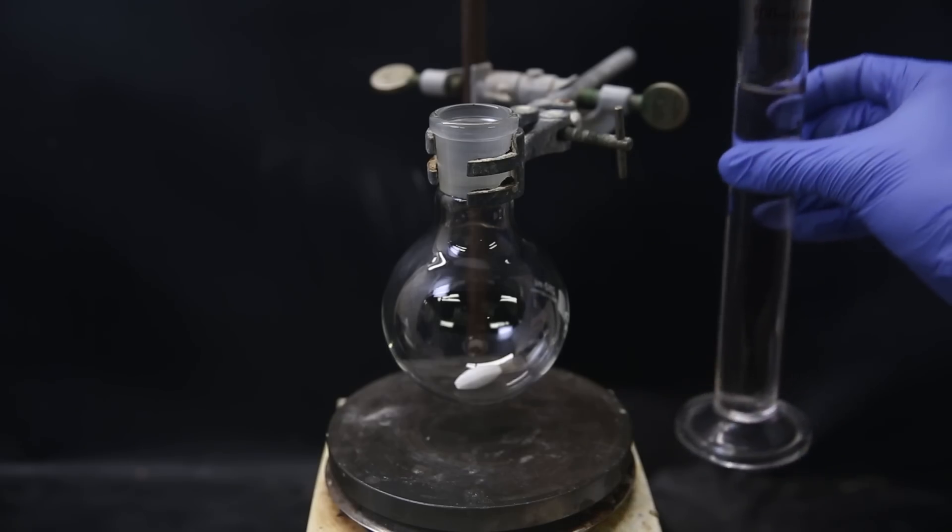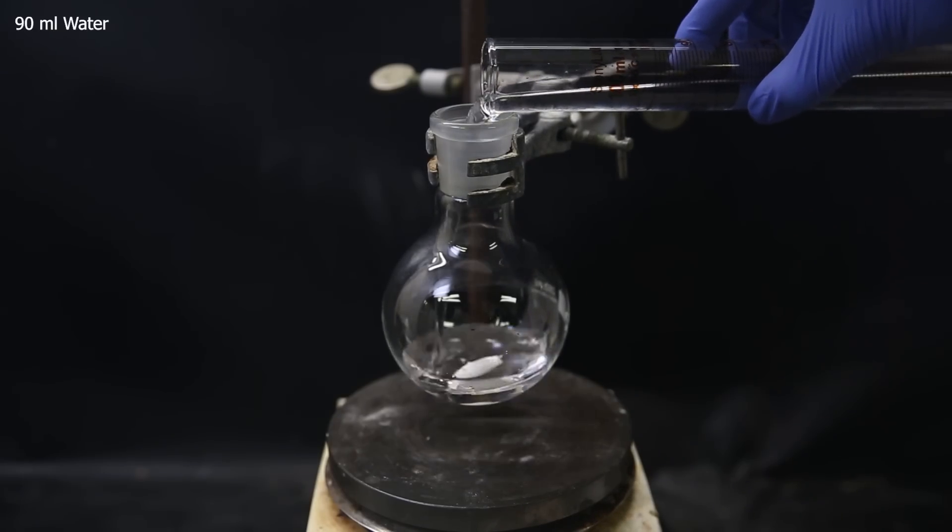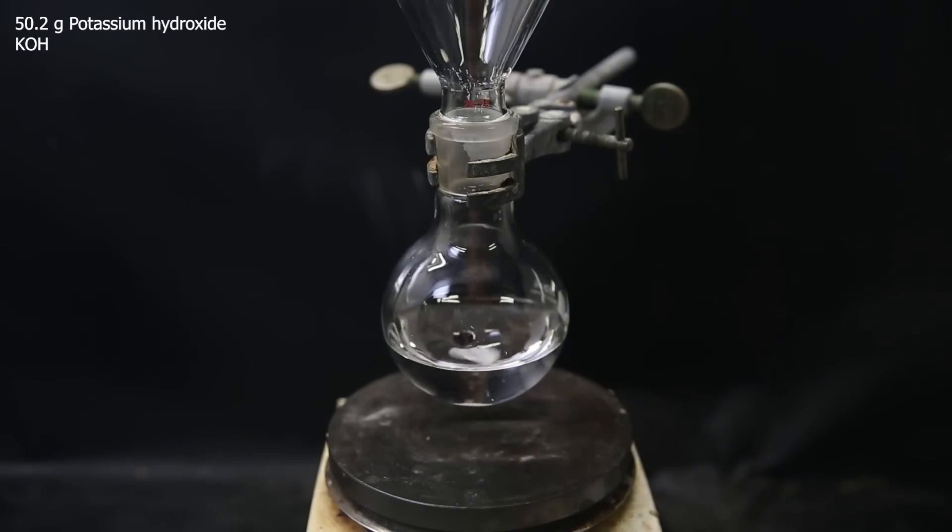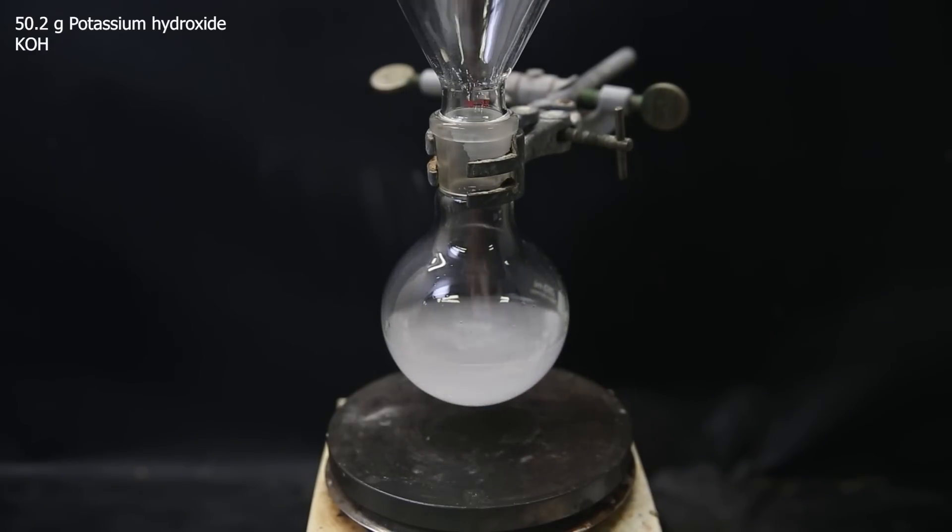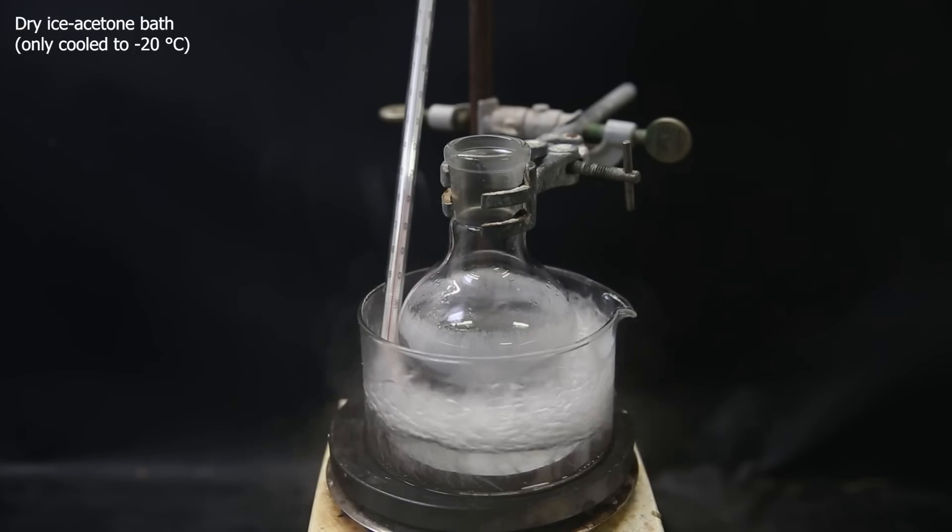So to get started with making the precursor, I set up a flask with a stir bar and add in 90 ml of water as a solvent, then 50.2 grams of potassium hydroxide as a base. I let it stir until everything has dissolved, and then set it in a dry ice acetone bath to cool it down to minus 20°C.